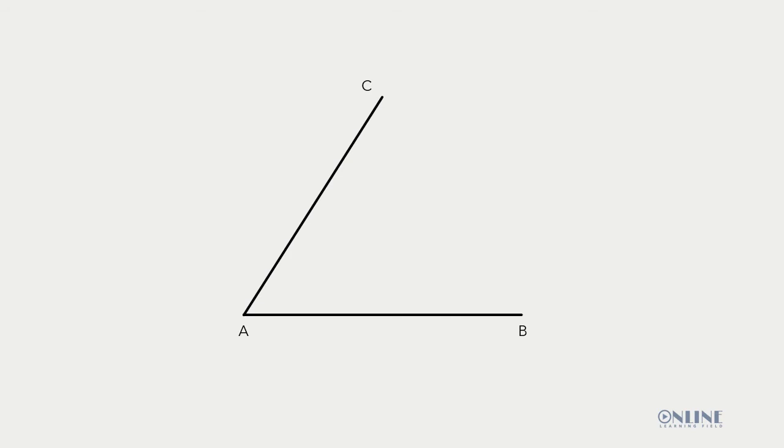So this is the angle we are going to be bisecting. We are going to divide this angle into two equal parts.